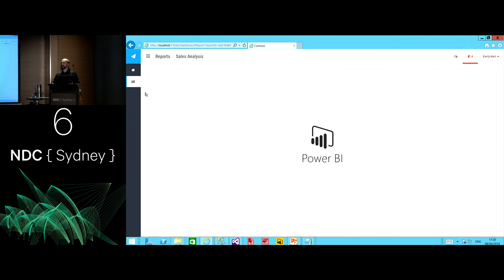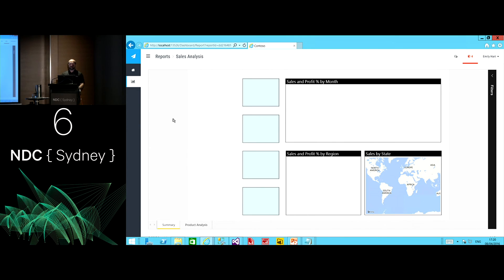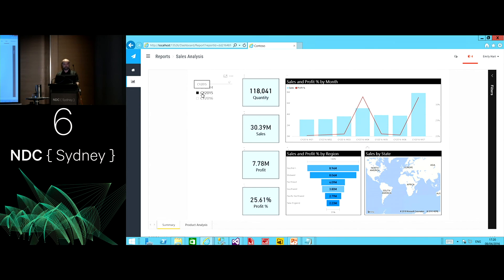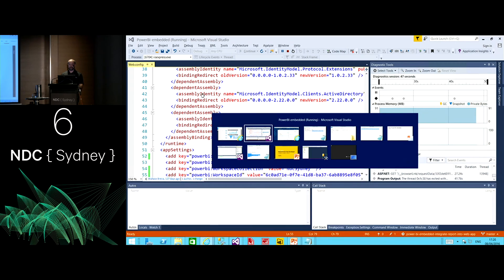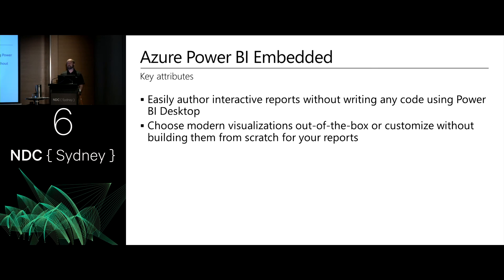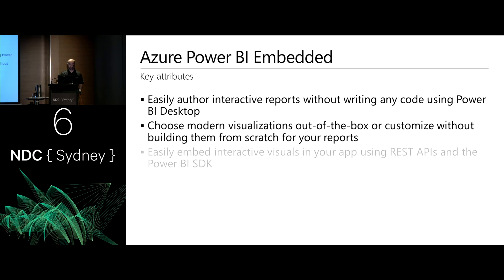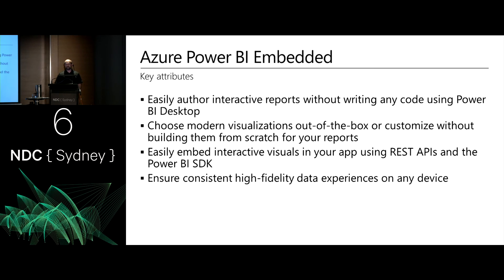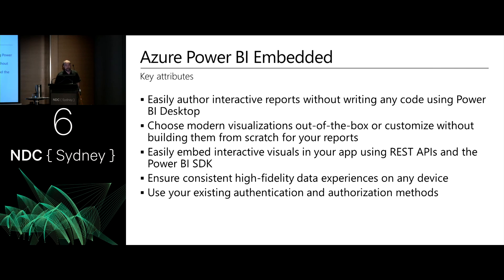You've got the full functionality of what you can achieve with Power BI Desktop, and the interaction is live data. Key attributes: easily author interactive compelling reporting using the Power BI Desktop application. Choose modern visuals out of the box, or custom visuals you develop will also work here. Easily embed interactive visuals using the REST API. Ensure consistent high-quality data experiences on any device — tablet, phone, desktop, browser. Use your existing authentication and authorization methods within your app.